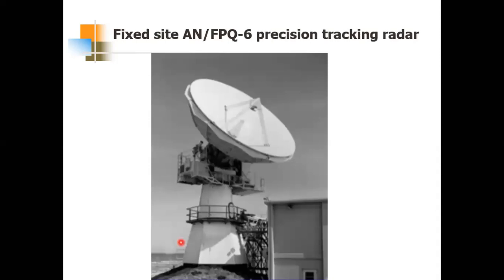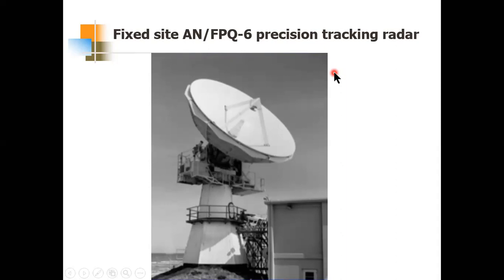An example of STT is the ANFPQ-6, a fixed land-based radar which operates in C-band. The frequency bands are: L-band is 1–2 GHz, S-band is 2–4 GHz, C-band is 4–8 GHz, and X-band is 8–12 GHz. So C-band is 4–8 GHz.